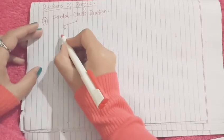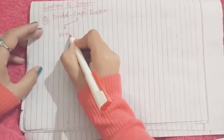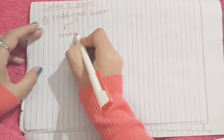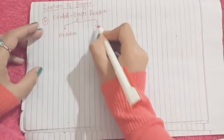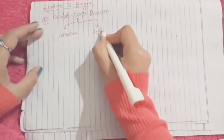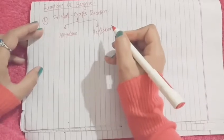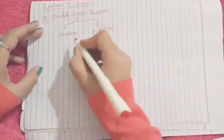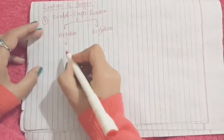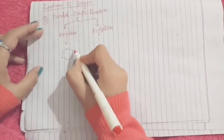In Friedel-Crafts reaction, we will talk about alkylation and acylation of the benzene ring. In alkylation, we simply introduce an alkyl group onto the benzene ring.